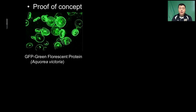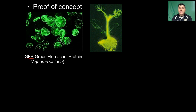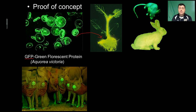As with any new technology, we need a proof of concept to show that it's going to work and that it's repeatable. An example of this can be seen when scientists took the green fluorescent protein from the jellyfish Aequorea victoria and transferred it into the cells of a tobacco plant. Not only did the tobacco plant take up those genes, but it expressed the protein and was able to glow under ultraviolet light. Since then, we've been able to replicate that process by transferring the green fluorescent protein into a myriad of organisms from mice to bunnies to monkeys to pigs.